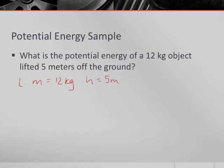And then what else do you have to remember that we always know even though it's not written? Hopefully you are saying G is 10 meters per second squared. Our equation is PE equals MGH.